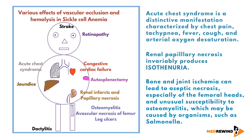Renal papillary necrosis invariably produces isosthenuria — the inability of the kidneys to produce either concentrated or dilute urine — where urine specific gravity equals plasma specific gravity, approximately 1.007 to 1.012. Bone and joint ischemia can lead to aseptic necrosis, especially of the femoral or humeral heads, and an unusual susceptibility to osteomyelitis, which may be caused by organisms such as Salmonella.